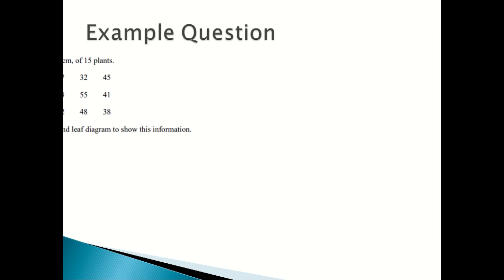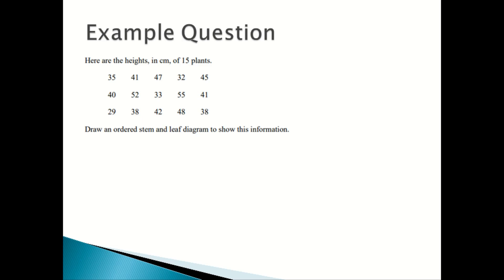An example question. Here are the heights in centimeters of 15 plants: 35, 40, 29, 41, 52, 38, 47, 33, 42, 32, 55, 48, 45, 41, and 38. Draw an ordered stem and leaf diagram to show this information.